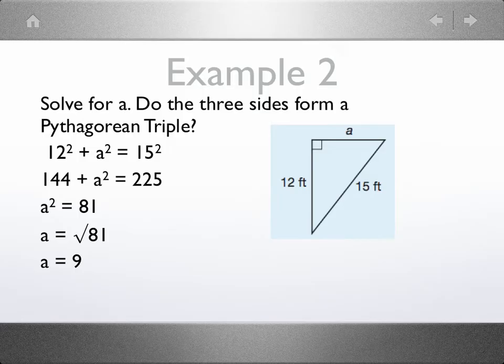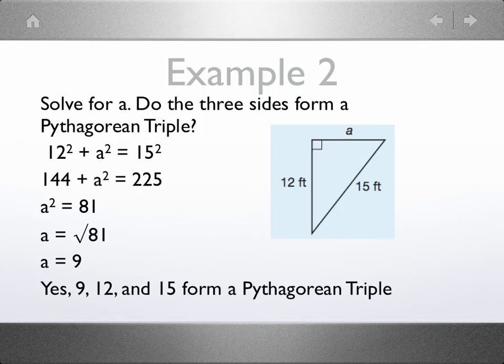And those three numbers, 9, 12, and 15, they do meet the definition for Pythagorean triples. Therefore, they form a Pythagorean triple because they're whole numbers which satisfy a squared plus b squared equals c squared.